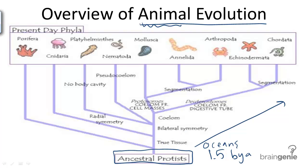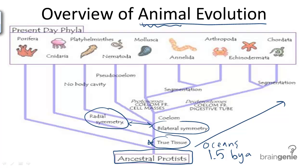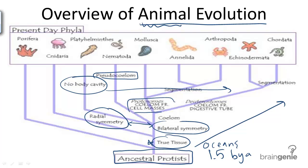These include tissue organization and specialization, body symmetry and head development — with body symmetry referring to the differences between radial symmetry and bilateral symmetry — and body cavity formation, ranging from no body cavity to the more complex pseudocoelomates and coelomates.